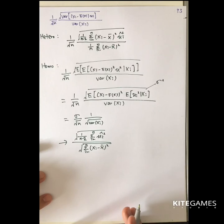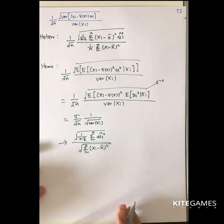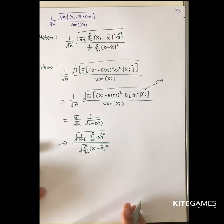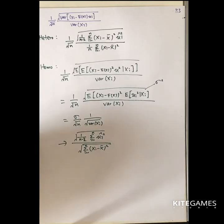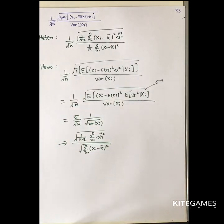So we care about this because we need to use different estimates to estimate beta 1 hat.